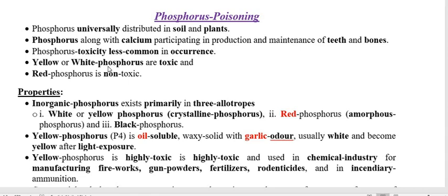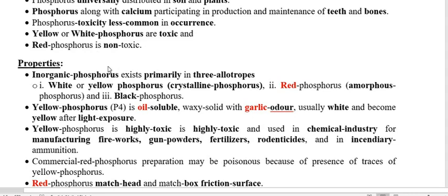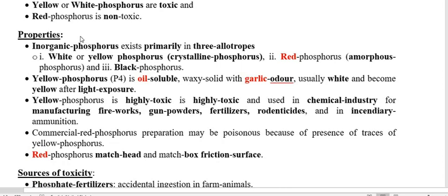Now we have to move to the properties of Phosphorus. Phosphorus exists in three forms: white or yellow Phosphorus, also known as crystalline Phosphorus; red Phosphorus, also known as amorphous Phosphorus; and black Phosphorus. In many places, you will find only these two: white and red Phosphorus.